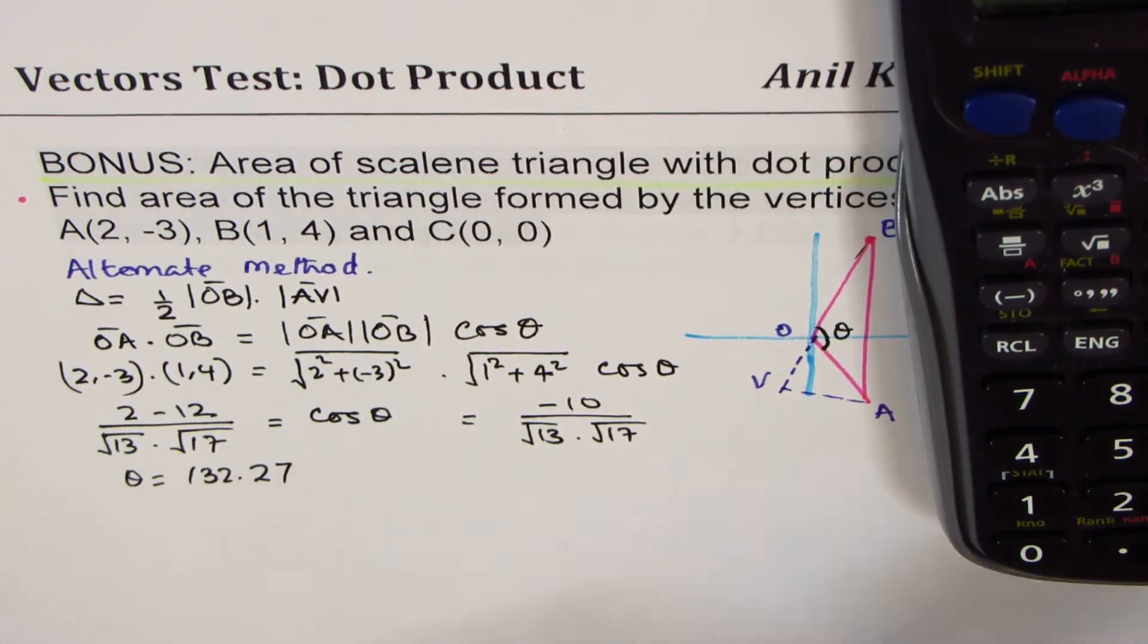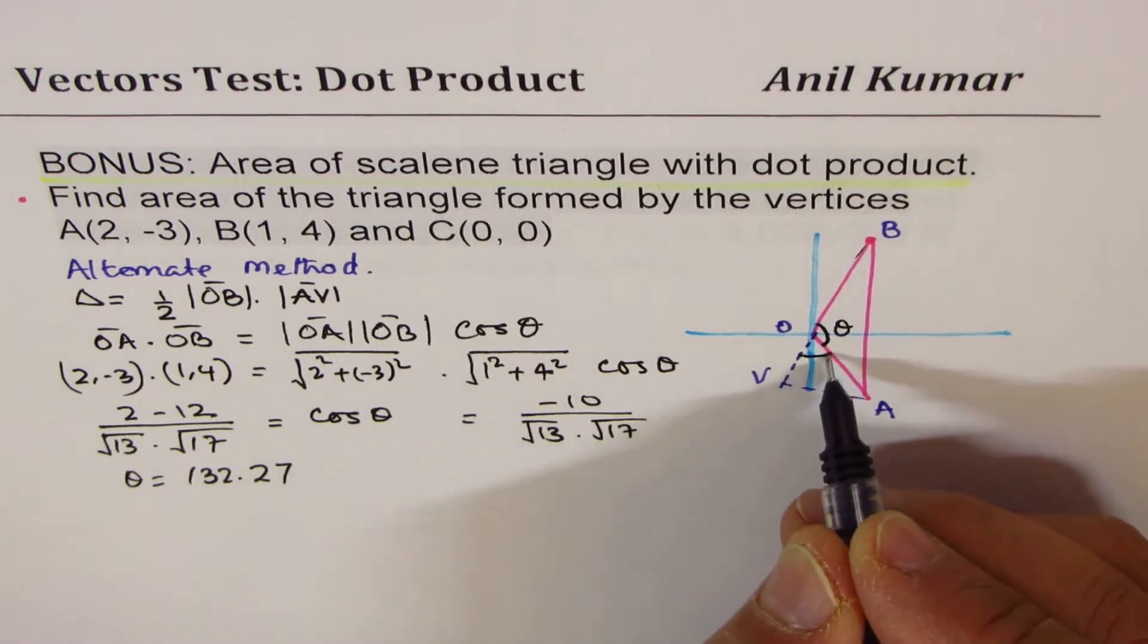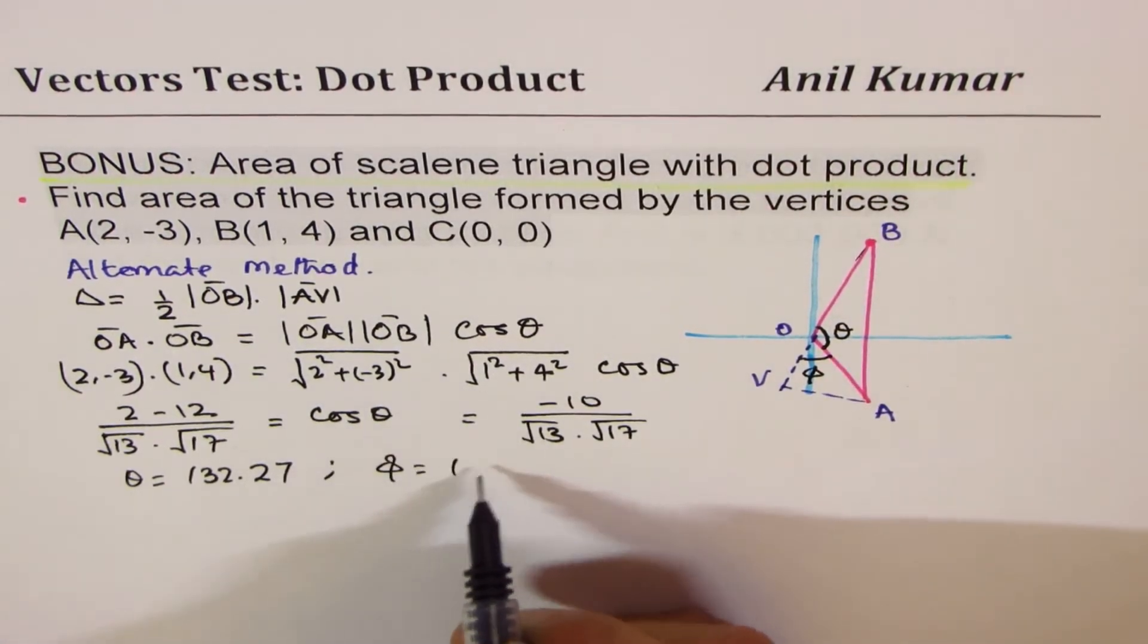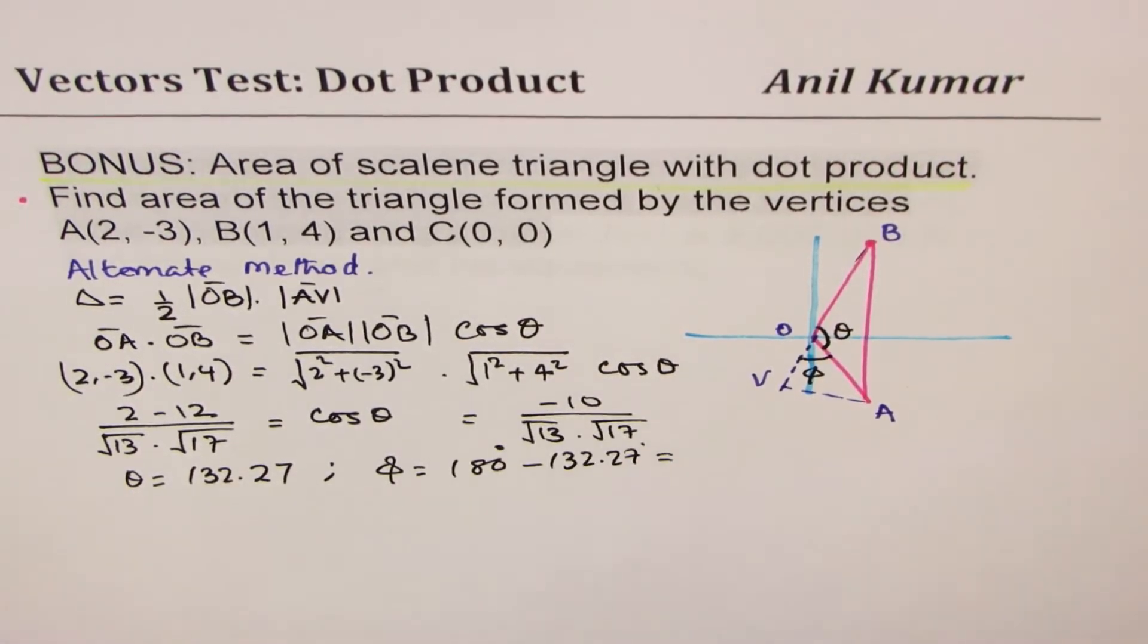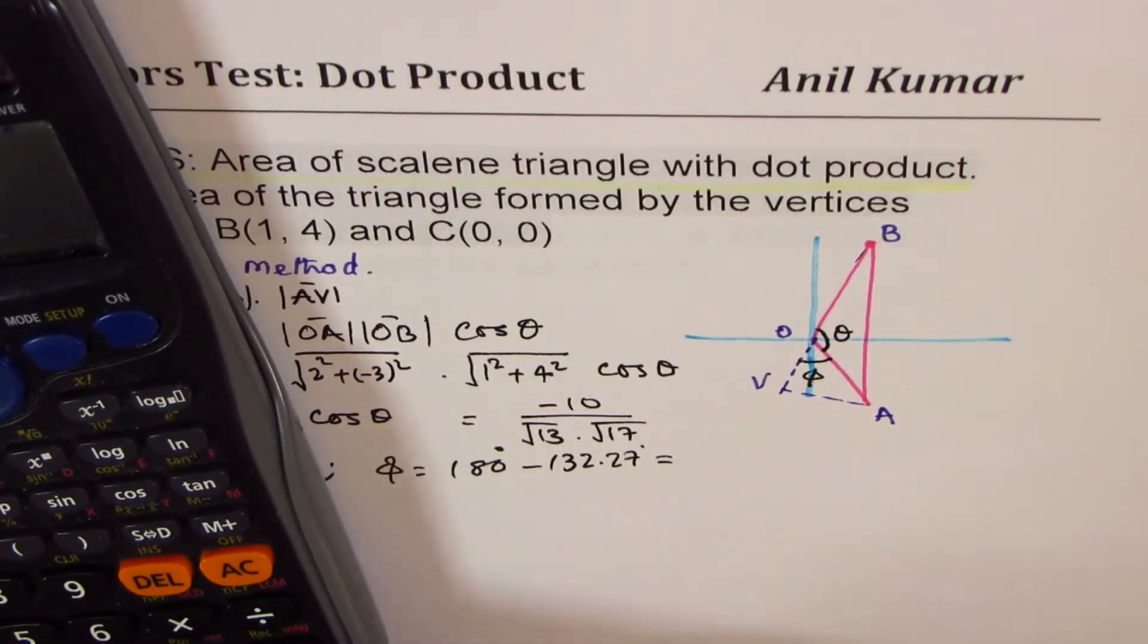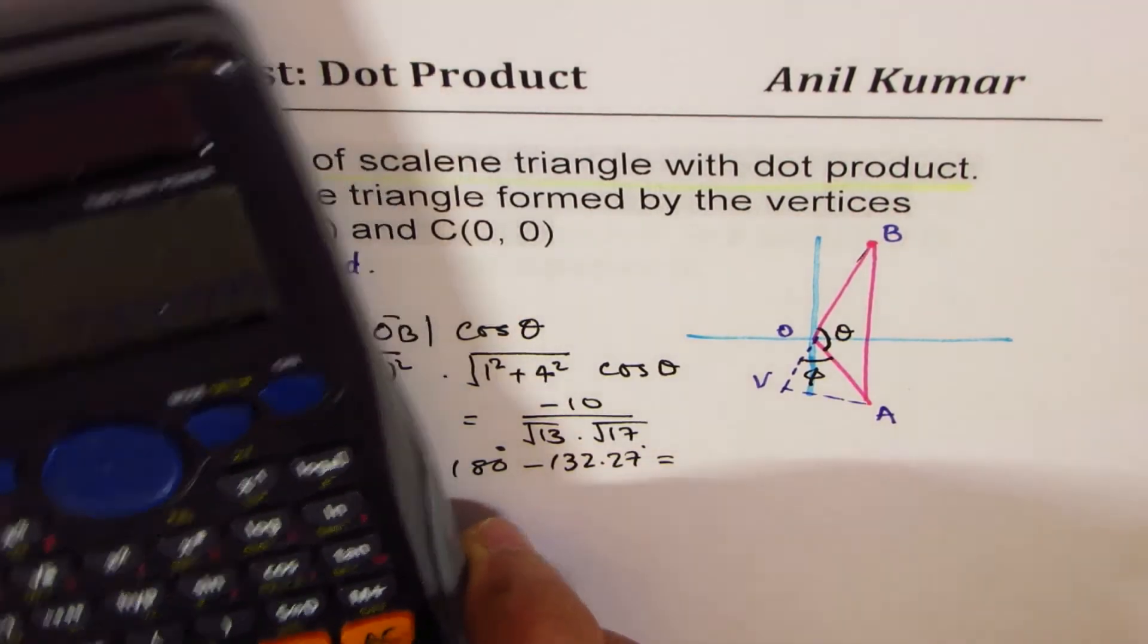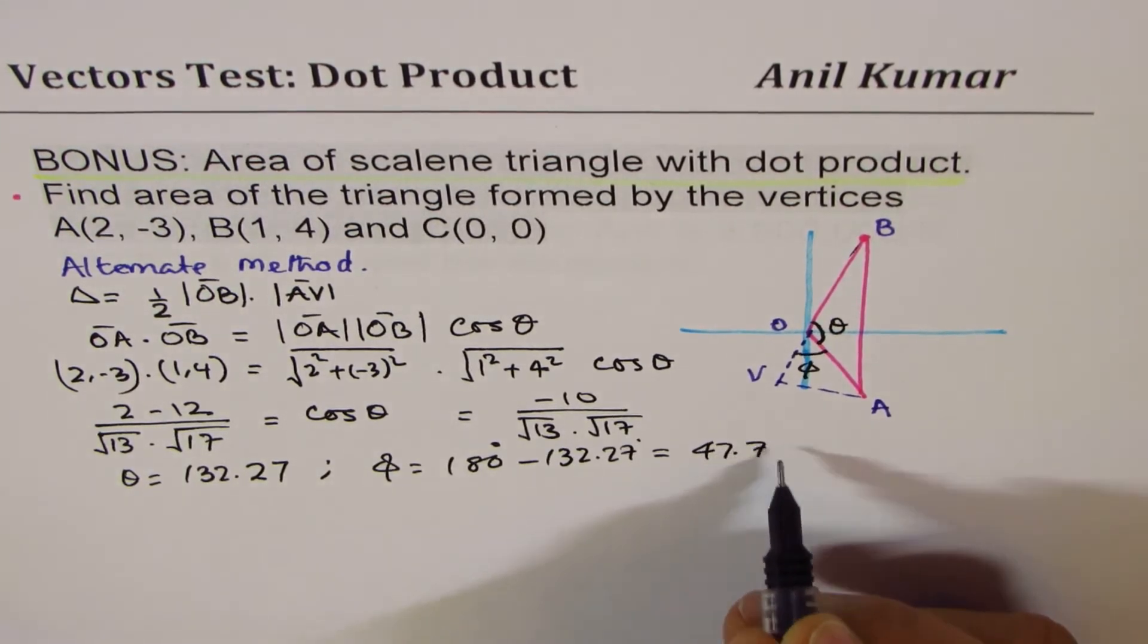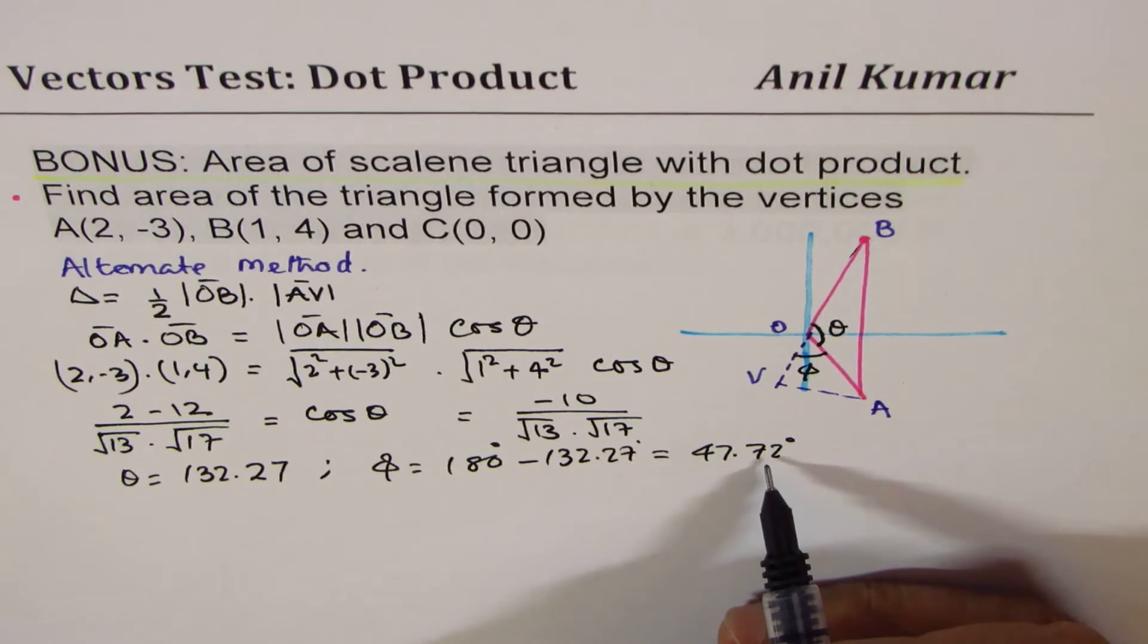Now from here we can find the angle φ. So φ equals 180° - 132.27°, which is 47.72°. So angle φ is 47.72 degrees.